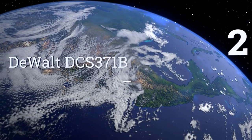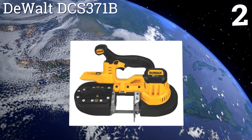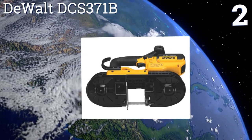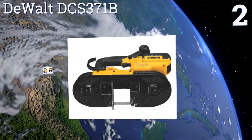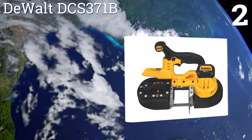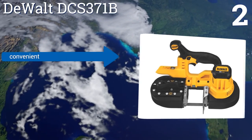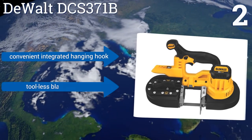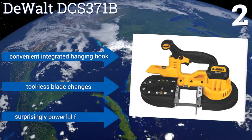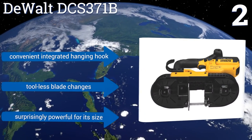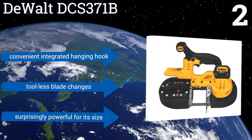At number 2, the DEWALT DCS-371B provides more accurate cuts and less user fatigue thanks to its well-balanced ergonomic design. It has a bright LED light to keep your workpiece illuminated and can be used for wood or pipes up to 2 inches thick. It features a convenient integrated hanging hook and tool-less blade changers. It's surprisingly powerful for its size.